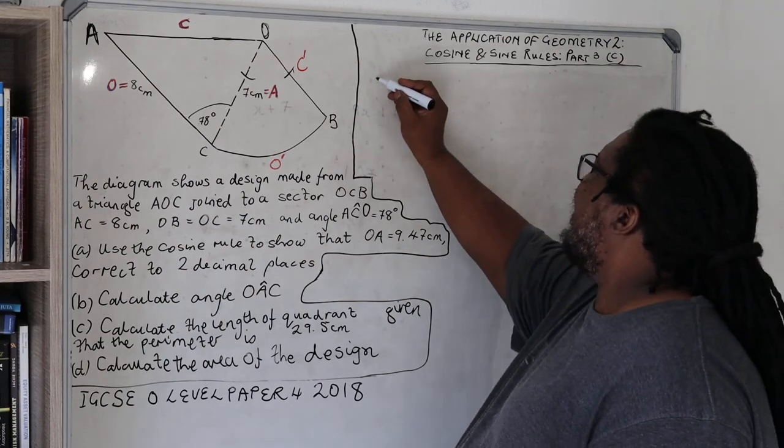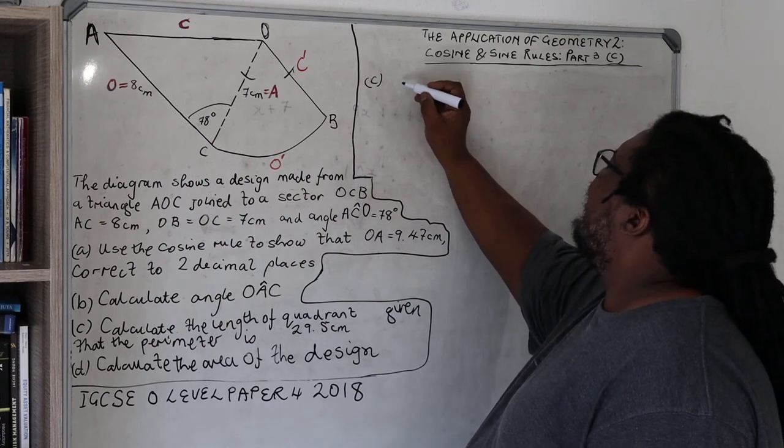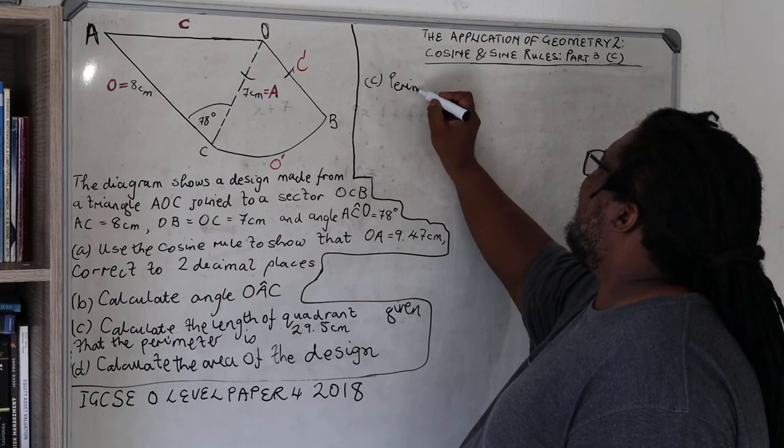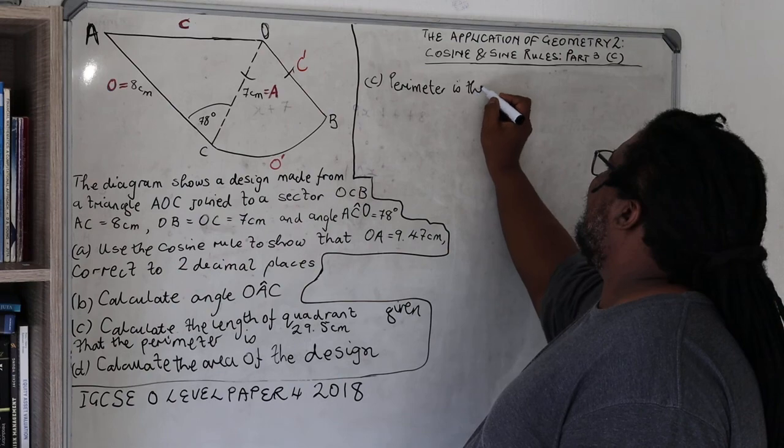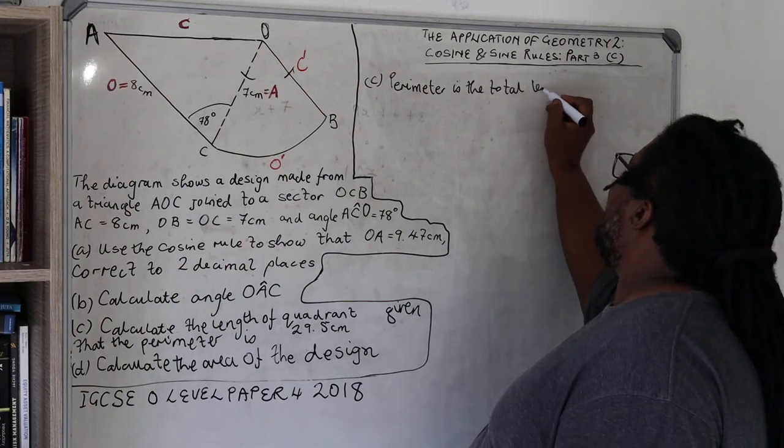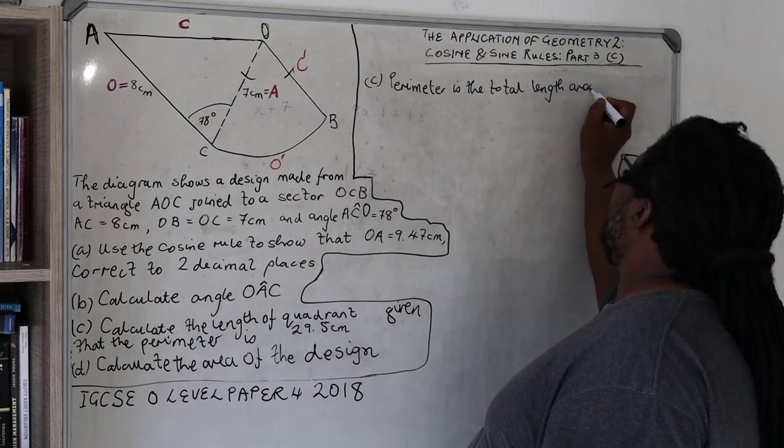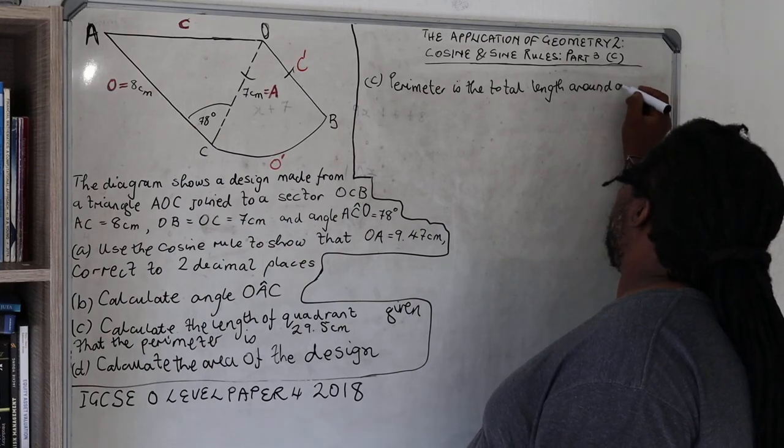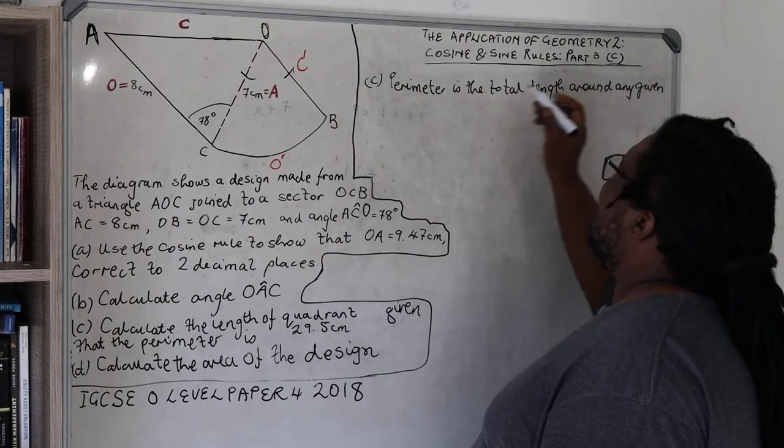First of all, let us define what perimeter is. The perimeter is the total length around any given shape.